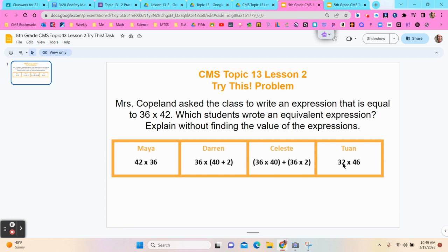And then the last one, 32 times 46. Tuan did not do it because he totally made different numbers. He didn't use either the commutative or associative property. So Maya, Darren and Celeste are the ones that got this one right.